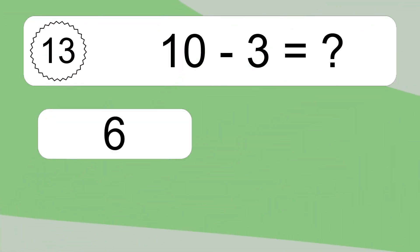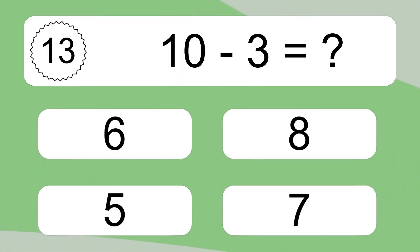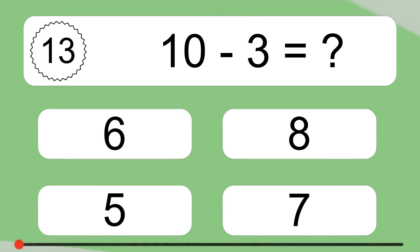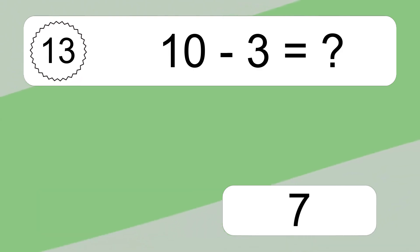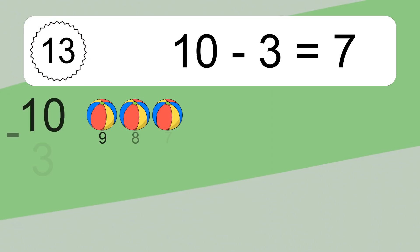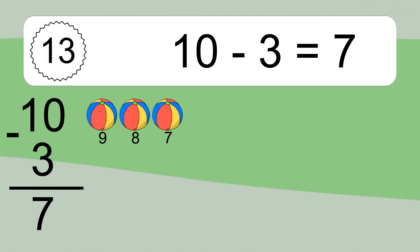10 minus 3 equals what? 10 minus 3 equals 7. Let's count it: 9, 8, 7.